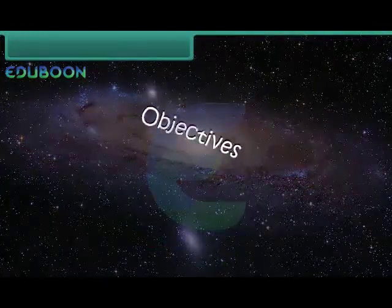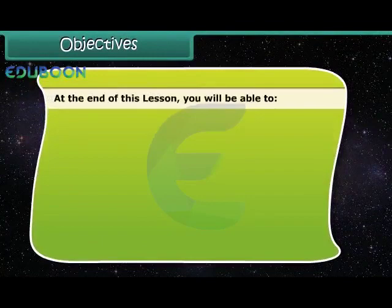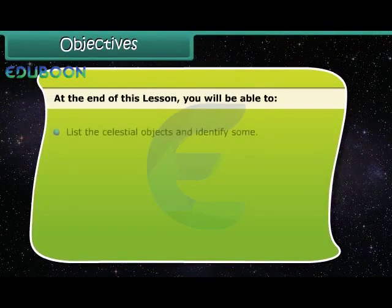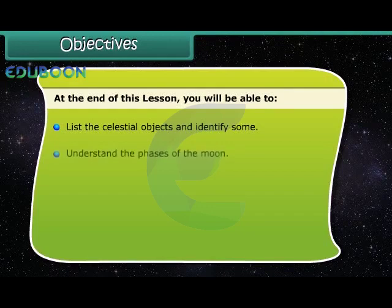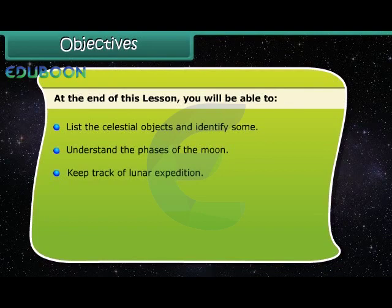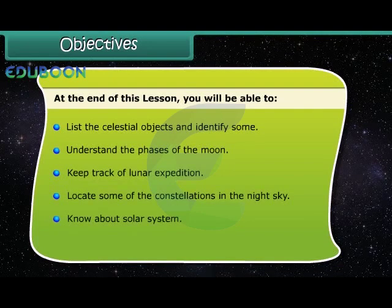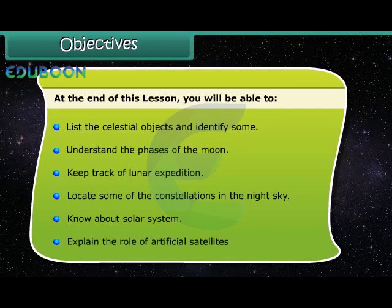Objectives. At the end of this lesson, you will be able to list the celestial objects and identify some, understand the phases of the Moon, keep track of lunar expedition, locate some of the constellations in the night sky, know about solar system, explain the role of artificial satellites.